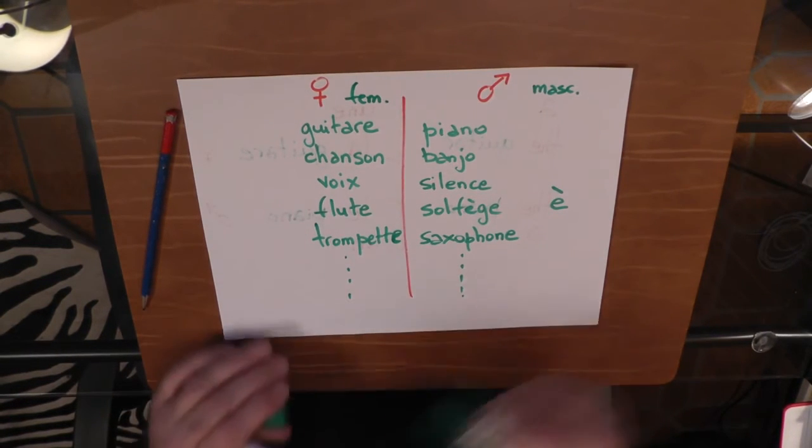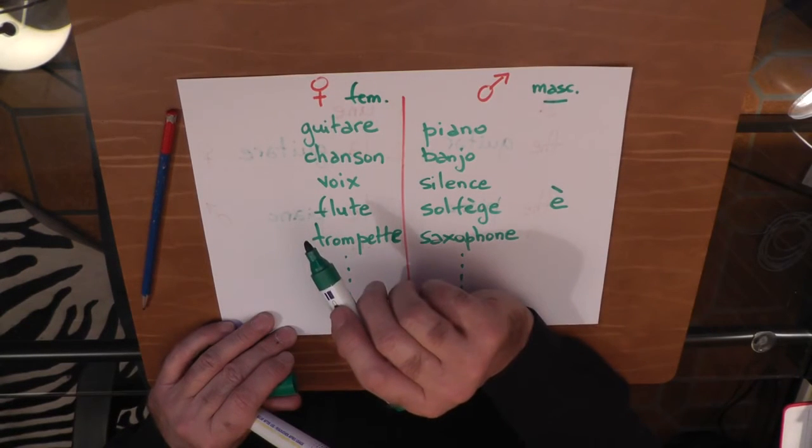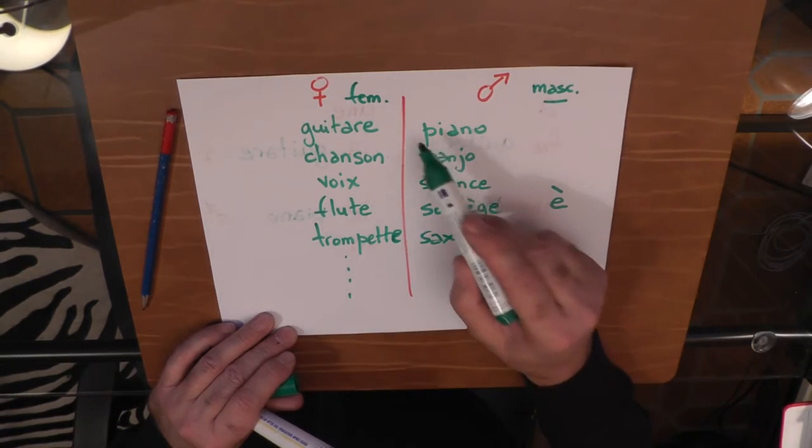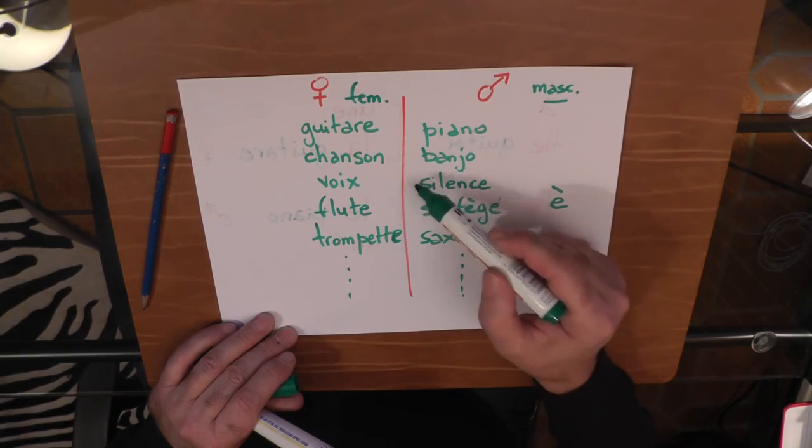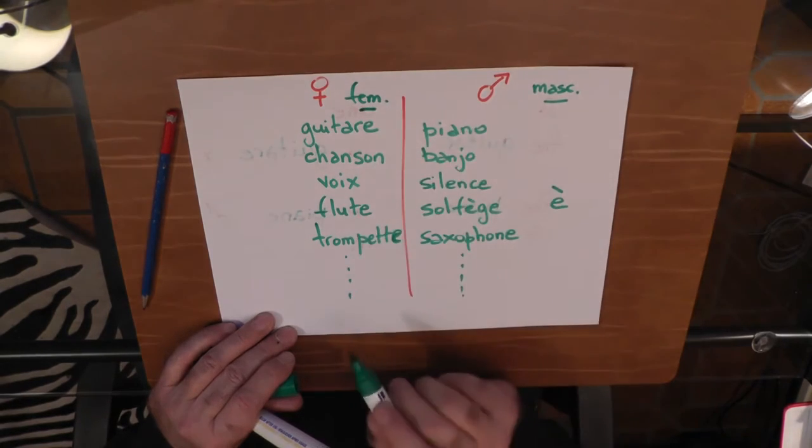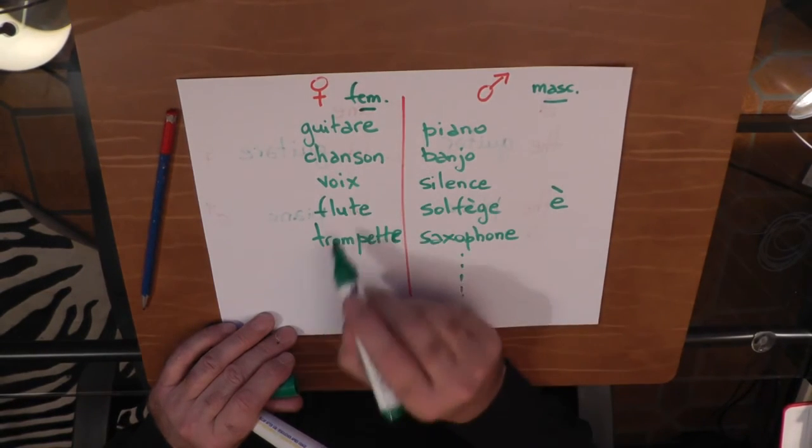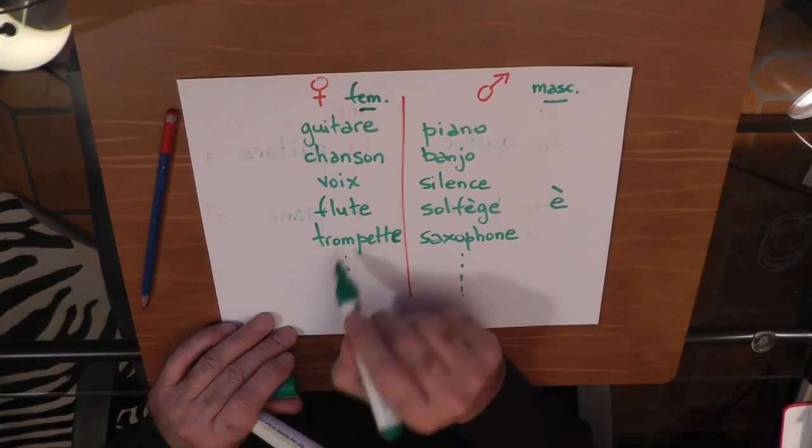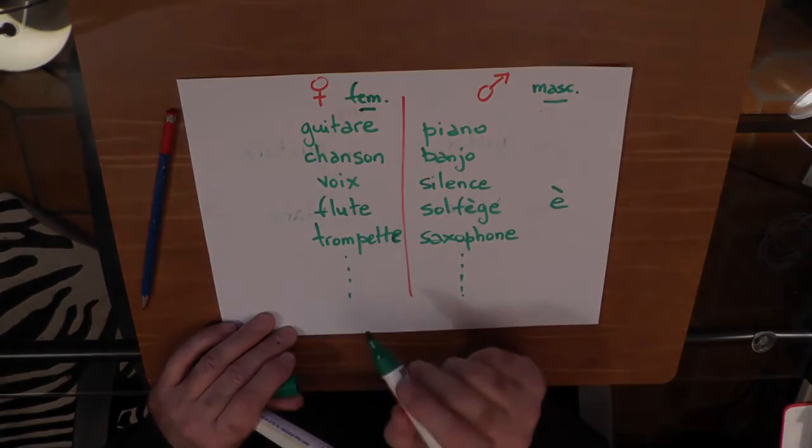So you have to look in the dictionary. If the noun is masculine, you would say le piano, un piano, le silence, un saxophone. And if the noun is feminine, you would say la chanson, une flute, la trompette, une guitare.